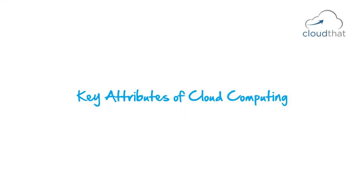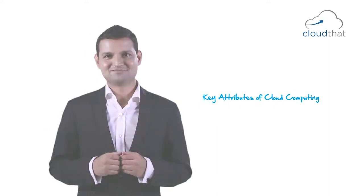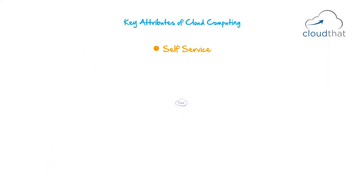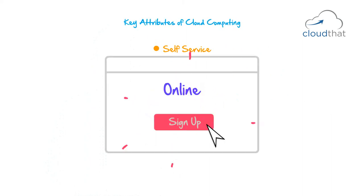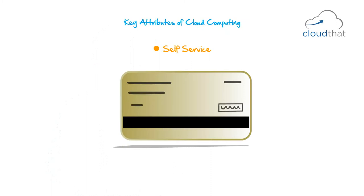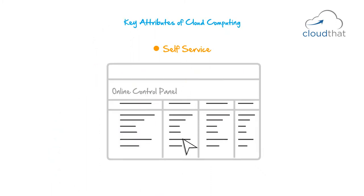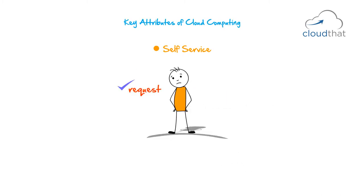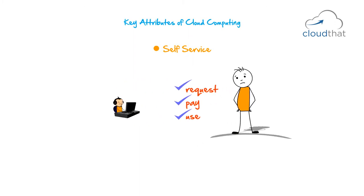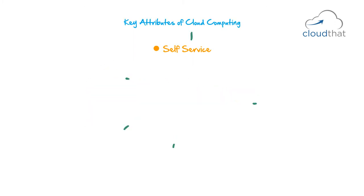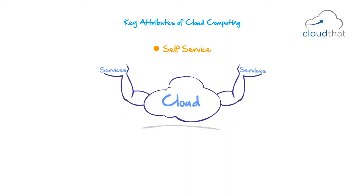In this video on the key attributes of cloud computing, we'll look at what attributes a service must possess to call itself a cloud service. First, we have self-service — cloud services must allow self-service access. You should be able to sign up online by providing your credit card details and access resources at will through an online control panel. Customers should be able to request, pay, and use the desired services without the intervention of human operators.